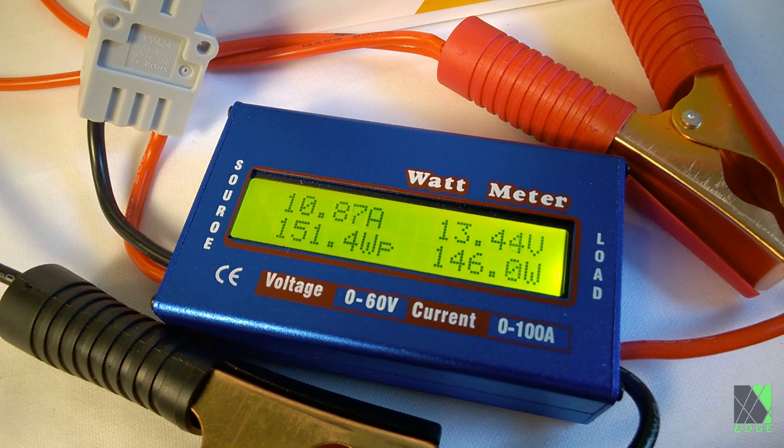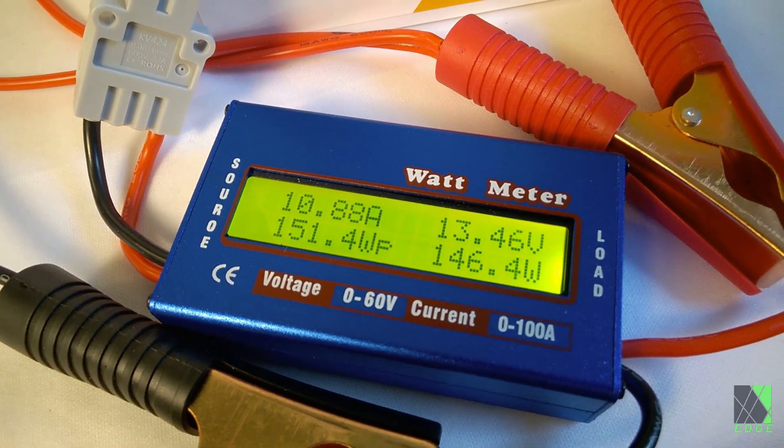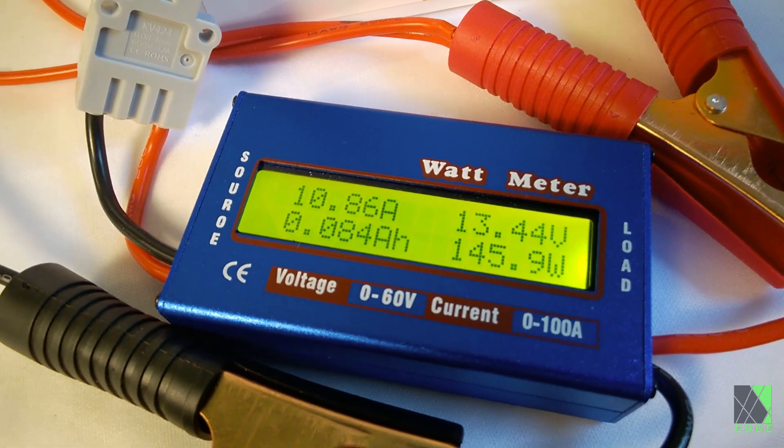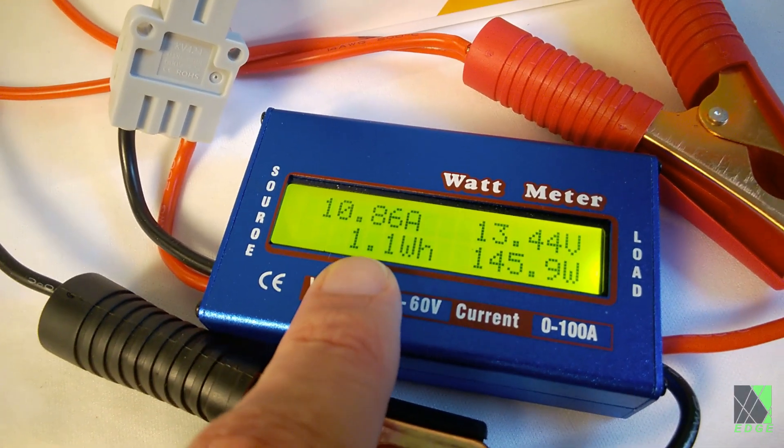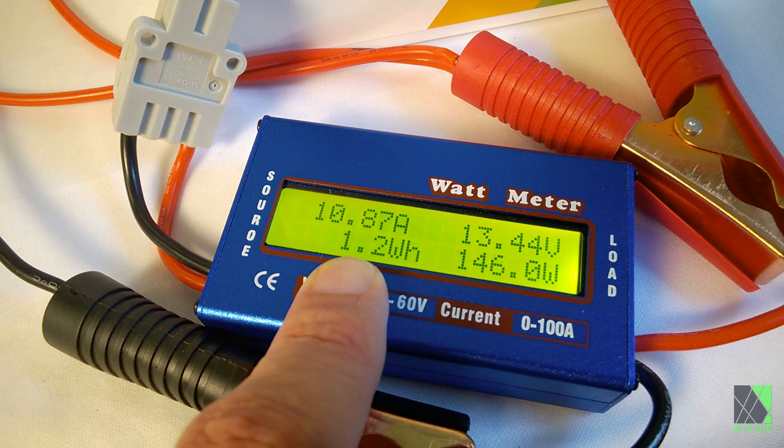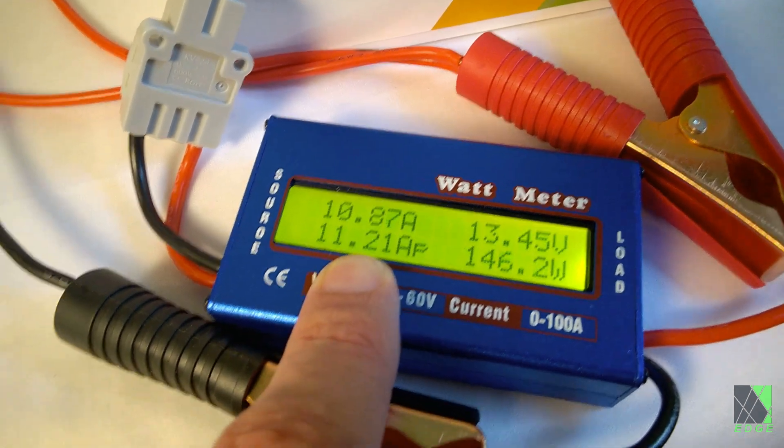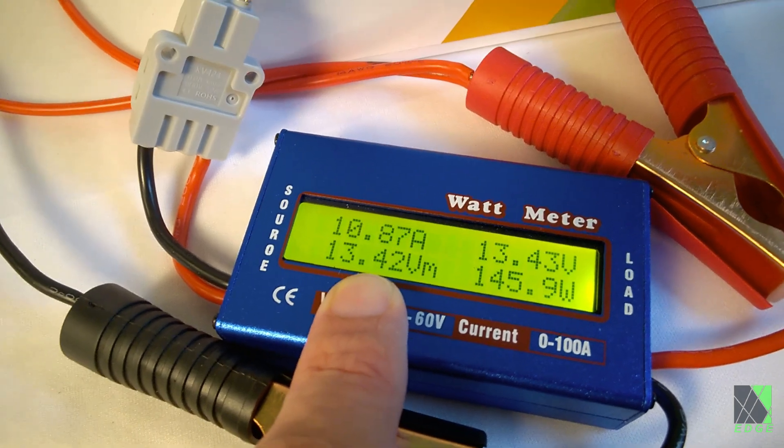We're drawing about 146 watts, 10.8 amps, 13.4 volts. Numbers are moving around a little bit. But you can see already that the watt hours are counting up. And now it's just a matter of waiting to see how many watt hours it takes, or amp hours, to get this oven up to an operating temperature.